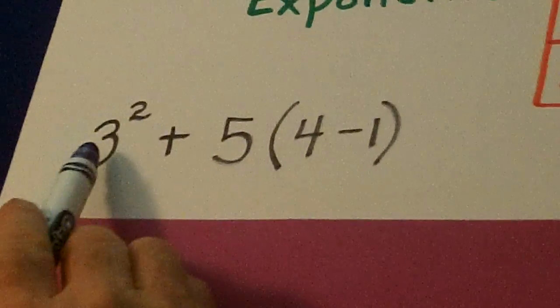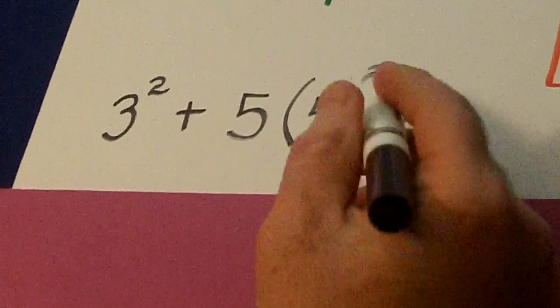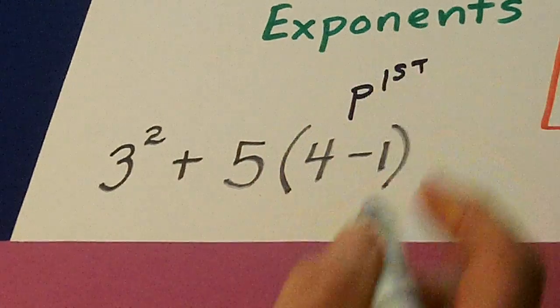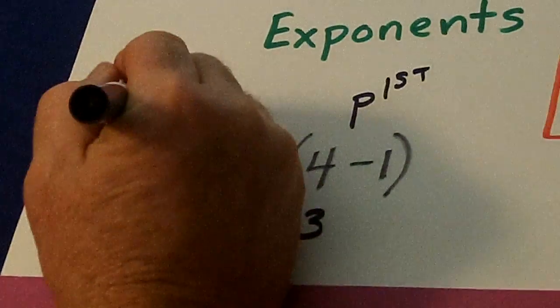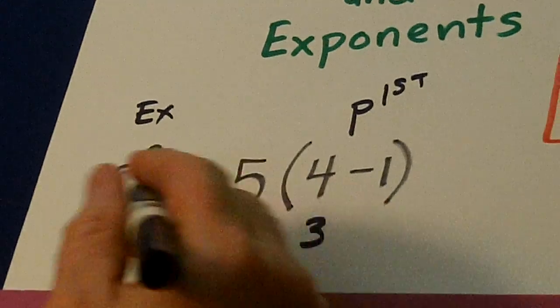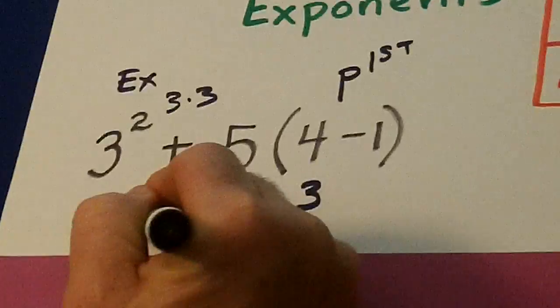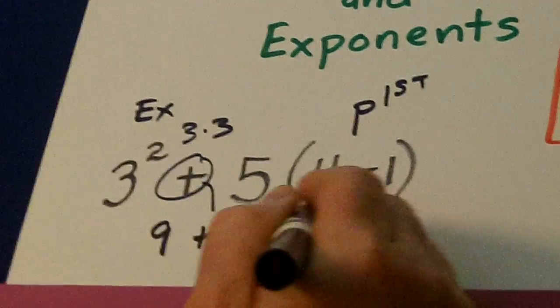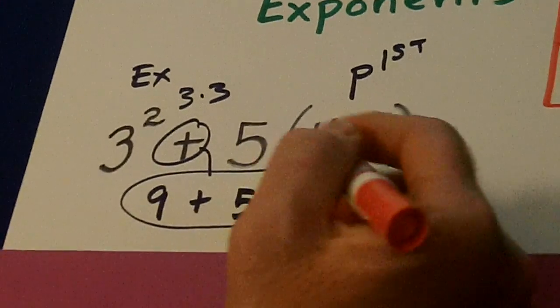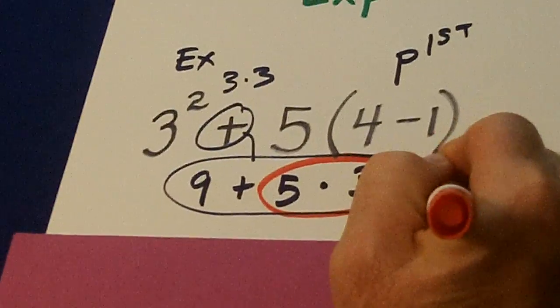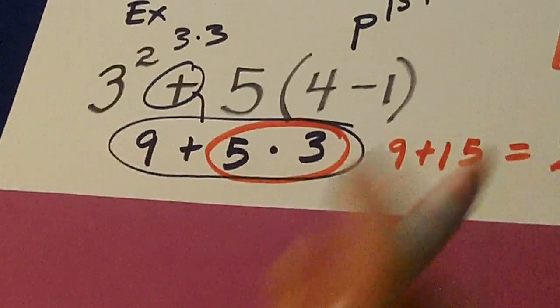Watch this. 3 squared plus 5 times something in parentheses. We're going to do the parentheses first. So, we'll have 5 times 3. Then we'll do the exponent second. And that's going to be 3 times 3 is 9. And then we bring down the plus. Now we look here. What do we do first? Multiplication. 9 plus 15 is 24.